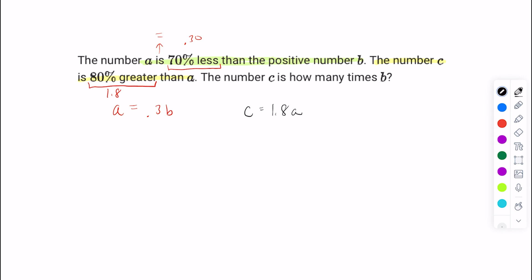And then they said the number C is how many times B. When you look at the question, what I want you to ask yourself is what letter is excluded now? And it looks like they completely got rid of A. So I'm going to do the same thing with some substitution. I'm going to get rid of A. We know A equals that. So I'm going to put it in right there. So we have C equals 1.8 times 0.3 B. Now it's just a matter of doing a simple computation with my calculator, seeing what 1.8 times 0.3 is. And I get C equals 0.54 B. So when they say the number C is how many times B, well, it's 0.54 times B. So your answer is going to be 0.54. Easy peasy.